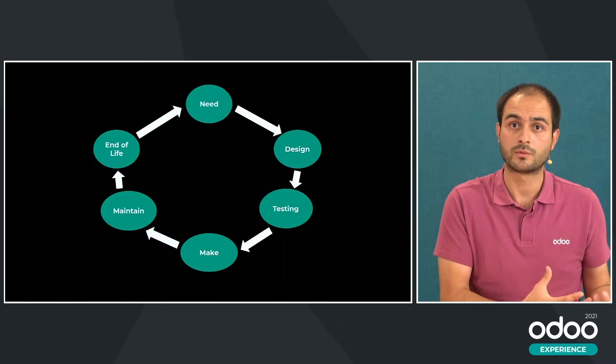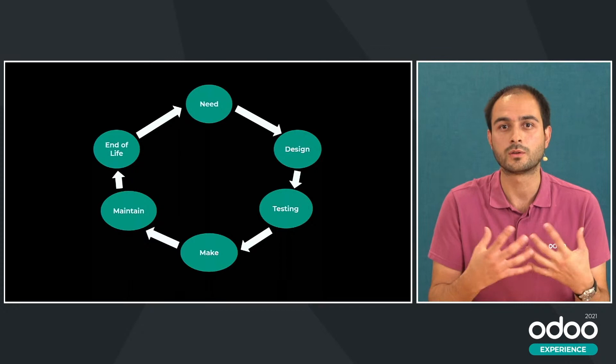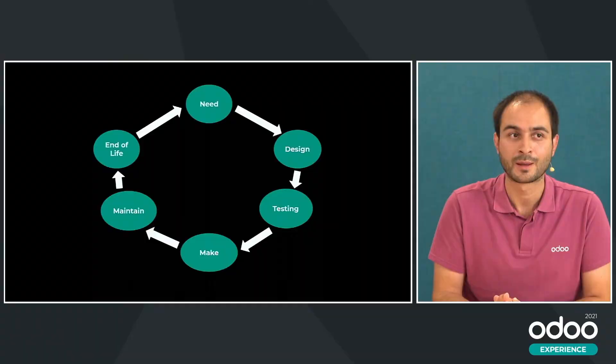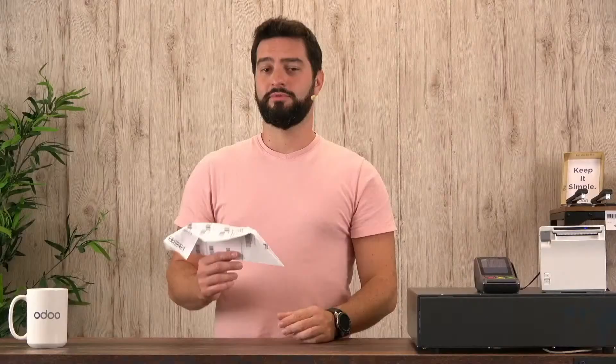But PLM doesn't stop there. Once you have a product on the market, just like Odoo, every year you have to maintain it and make it better. This is what we mean by the maintain section. Once you come up with a new version, you have to make sure the last version is no longer maintained and no longer manufactured, so you can focus on the new version. So Marcelo, this is what we mean by PLM — just like making a paper airplane: you identify the need, design it, and test it until you are happy with the result.